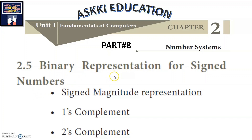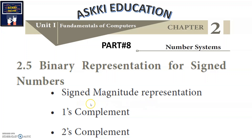Binary numbers can represent negative numbers. There are three types of representations: first, signed magnitude representation; second, one's complement representation; and third, two's complement representation.